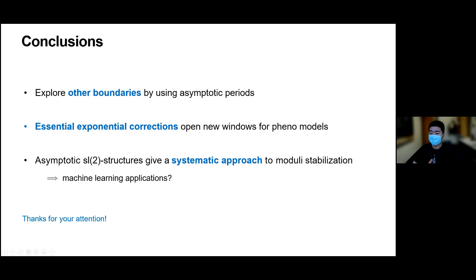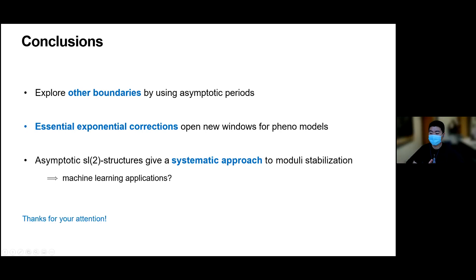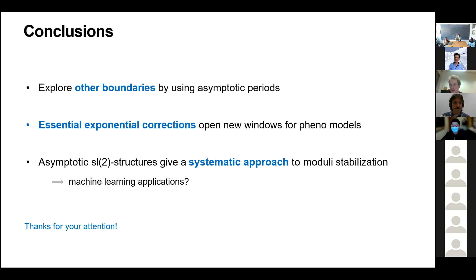Let's thank Damien for the very nice talk. Is there any question? Yes, Liam — thanks for the nice talk. I had a question about this idea of getting an exponentially small superpotential while keeping order-one masses. Did I understand correctly that the idea is to set to zero the polynomial part of the superpotential but keep things that are metric essential?